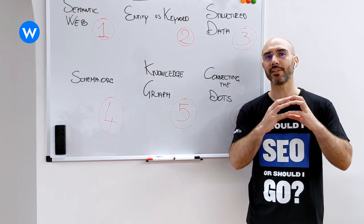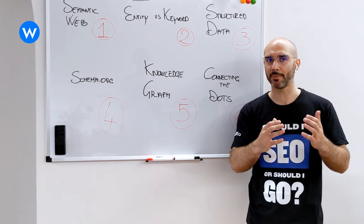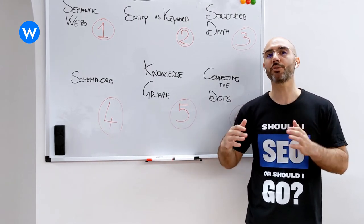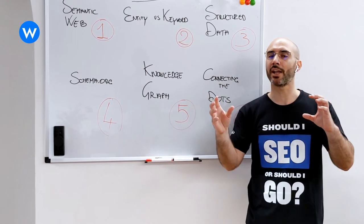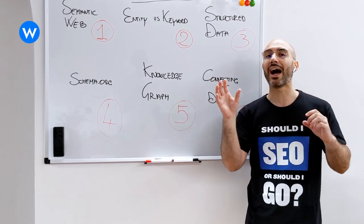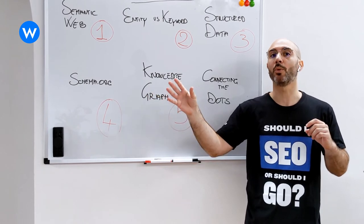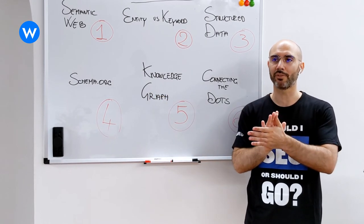Gennaro is an entity type person in schema. There is an entity type called person, and there is also a property that I can connect to person, which is called affiliation. And then there is an organization, which is called WordLift. So there is an entity type organization, WordLift.